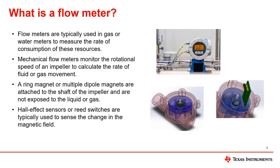A flow meter is used to measure how much of a liquid or gas is flowing through a pipe. Flow meters are used in many automotive and industrial applications, such as air going into a combustion engine or liquid going into a water treatment plant. A mechanical flow meter has an impeller that rotates when the fluid or gas flows through the meter. As the impeller rotates, a ring magnet — which is typically a multipole magnet — produces a rotating magnetic field that can be measured using hall effect latches.